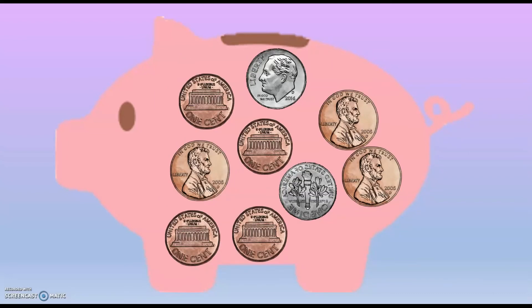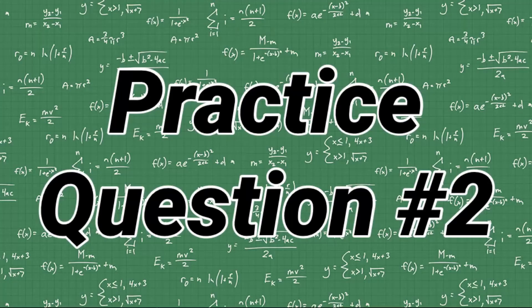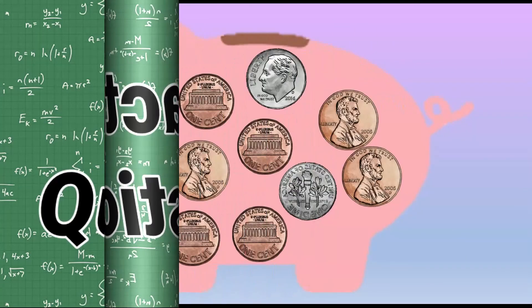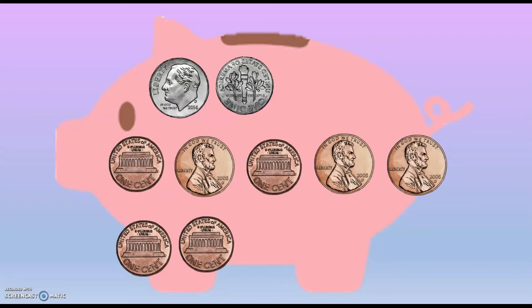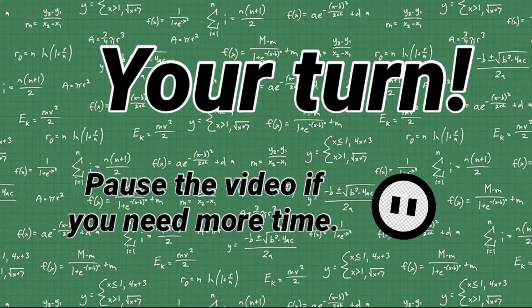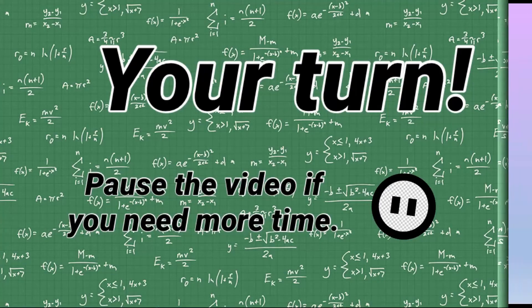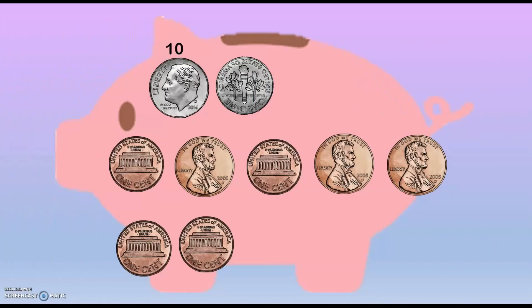All right, let's get ready for another piggy bank. We still have some tens and we still have some ones. The first thing I like to do is make sure that all of my pennies and my dimes are in order — I put my dimes first and then my pennies. Let's count: 10, 20. That's all the dimes.